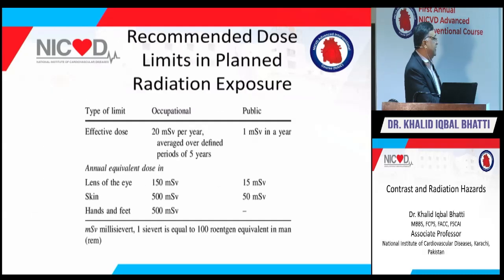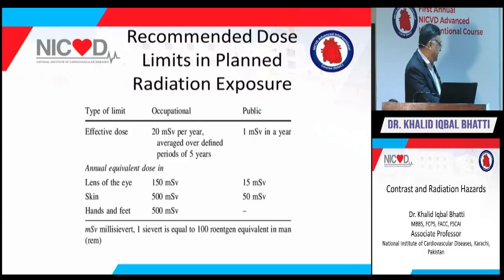Recommended dose limits for planned radiation exposure are: for occupational staff, an effective dose of 20 mSv per year averaged over 5 years; for the public, 1 mSv per year. Annual equivalent dose limits are: for the eye — less than 150 mSv for occupational, less than 15 mSv for public; for skin, hands, and feet — 500 mSv.